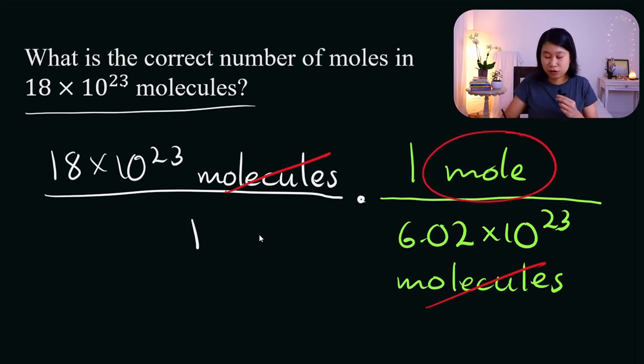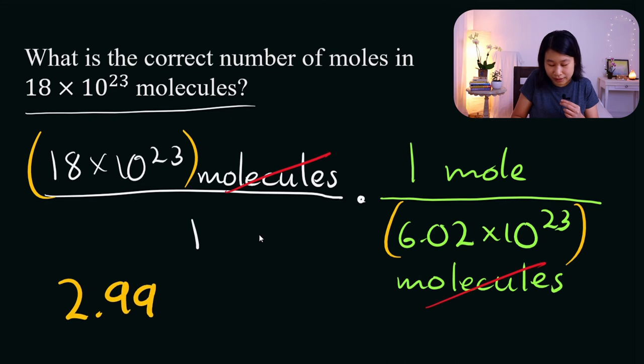And so at this point, because I have the unit of moles left, I know that I can now divide. When we do this division, again, keeping these numbers in their parentheses, we come out with 2.99 moles.